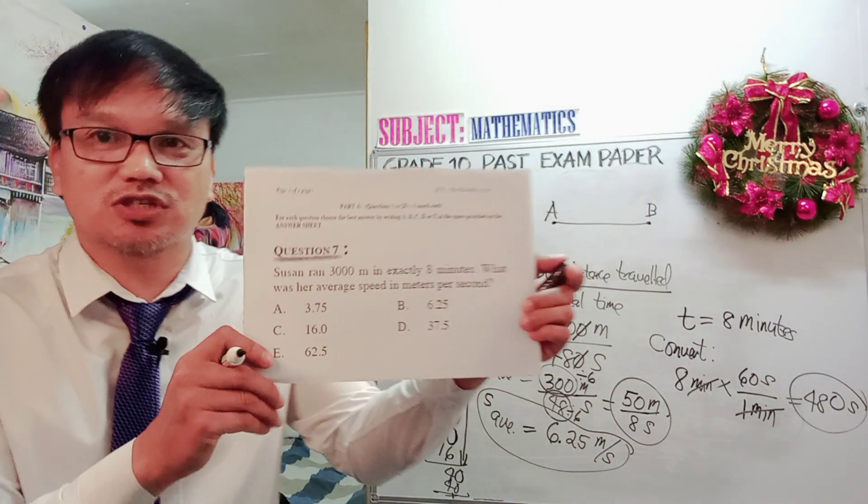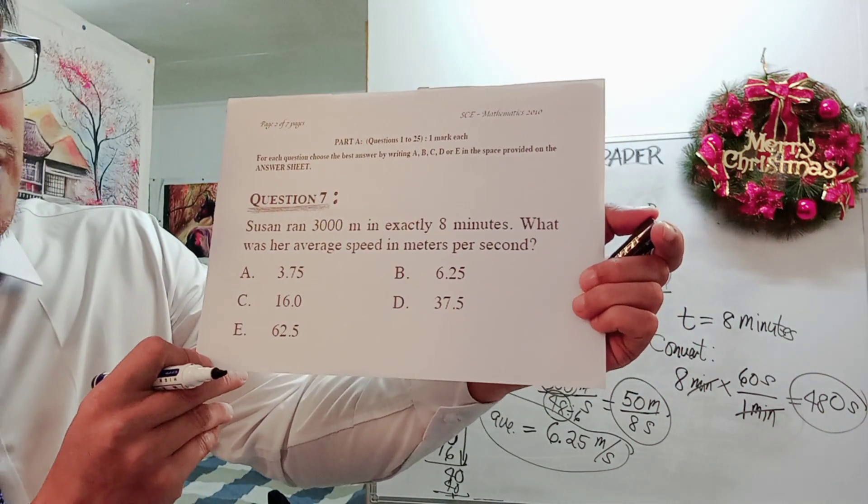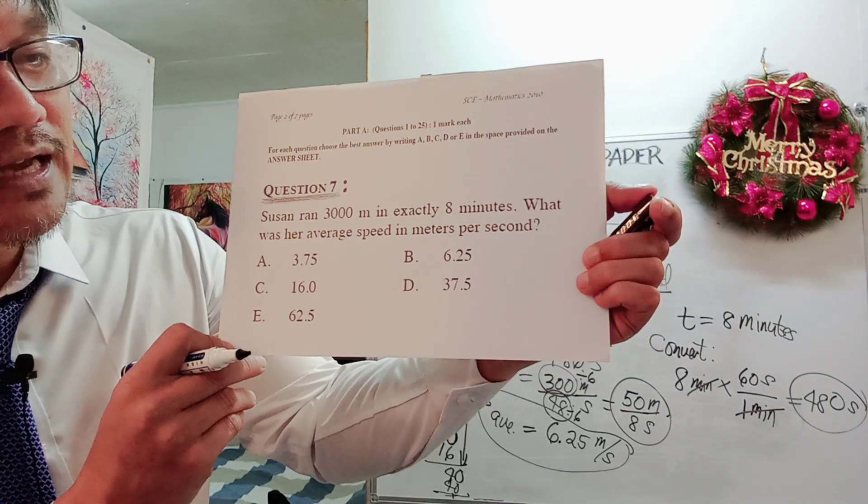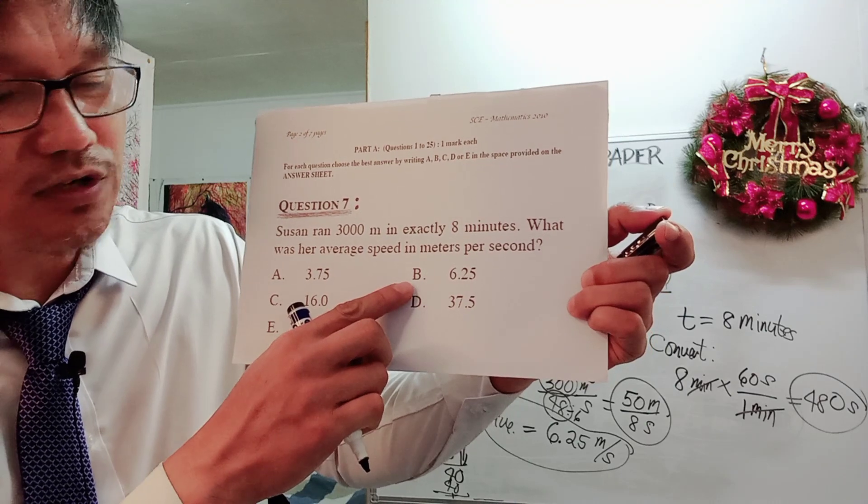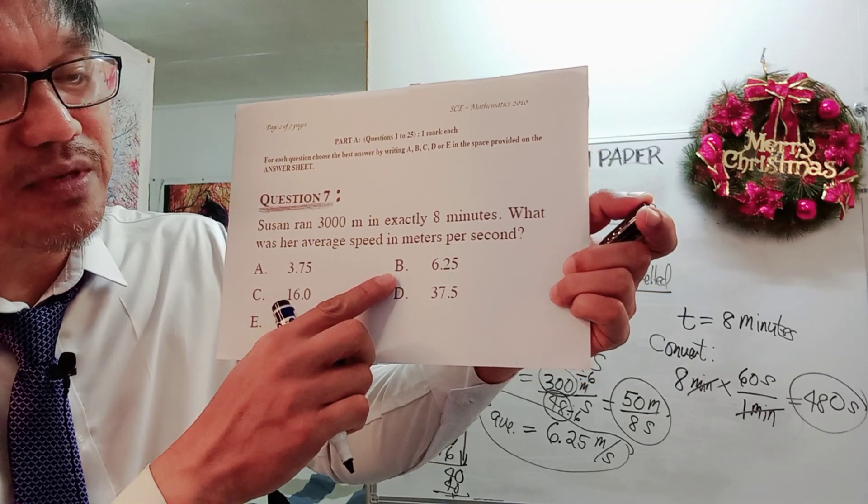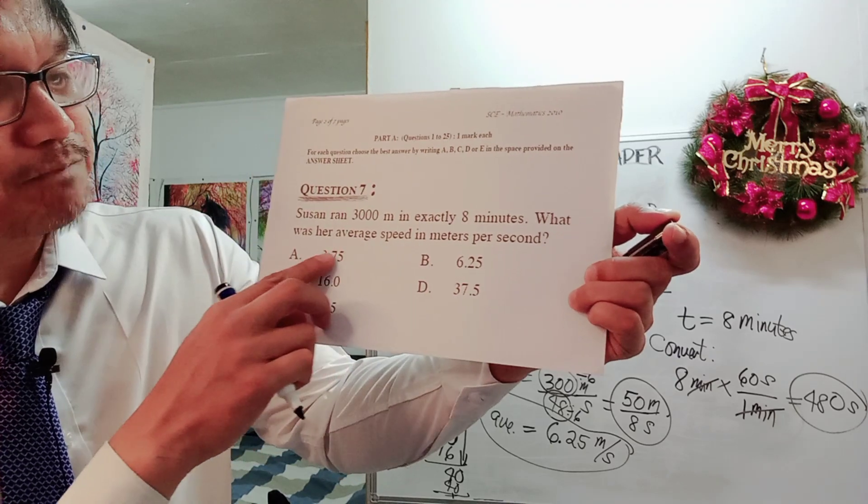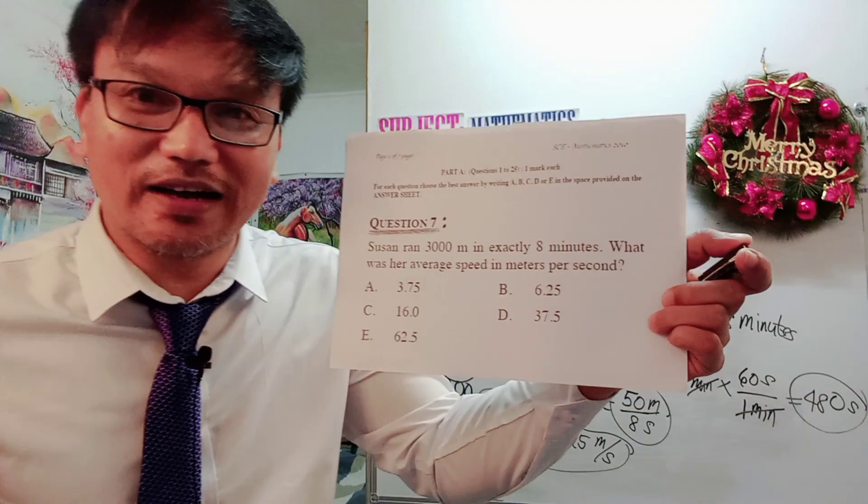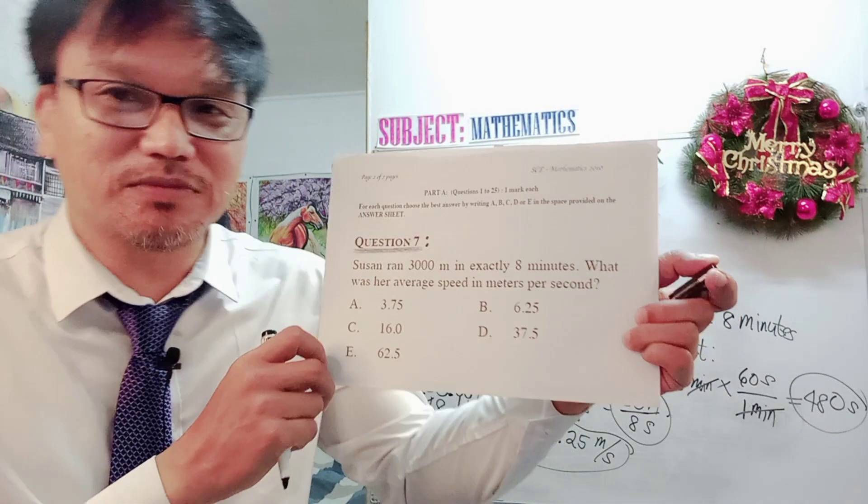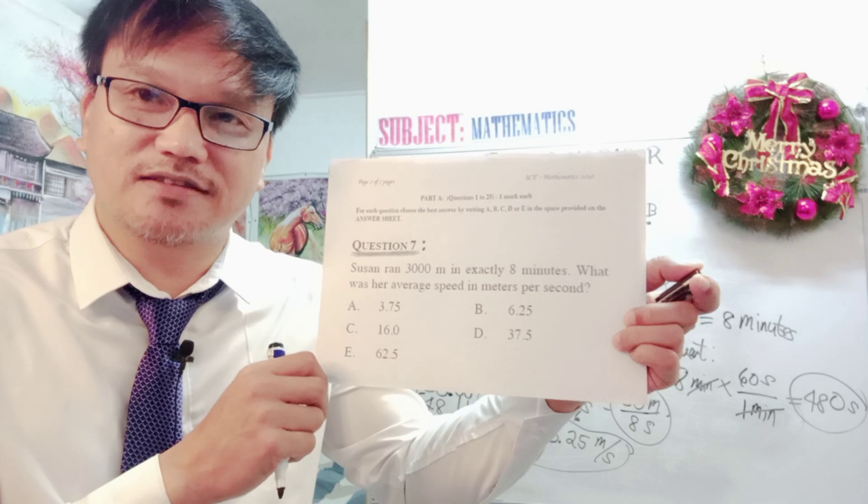Let us try to check the options here if we are getting it right. Is there any value here that is 6.25? Yes, correct. So therefore, the answer is letter B, 6.25, the average speed in meter per second. This is question number 7, paper 2010, grade 10 mathematics.